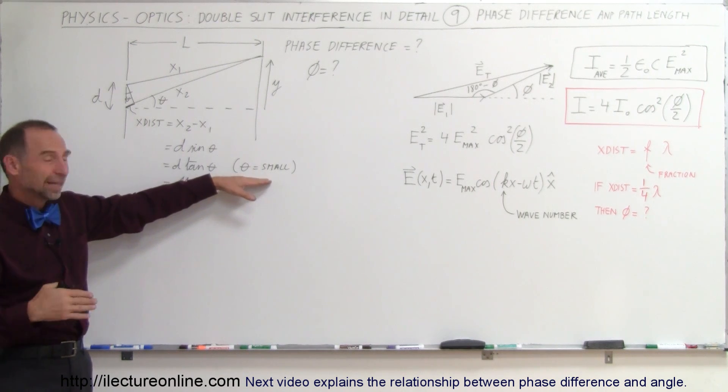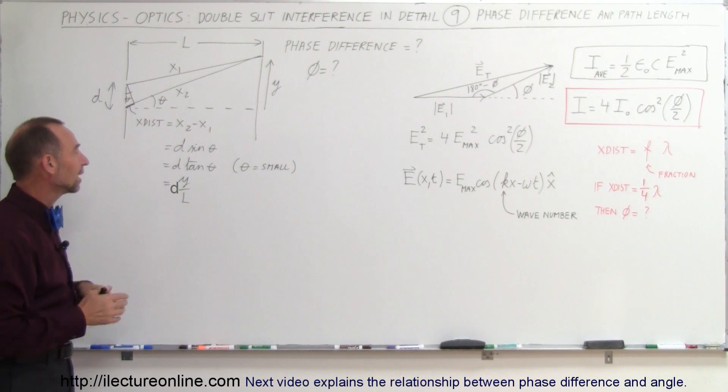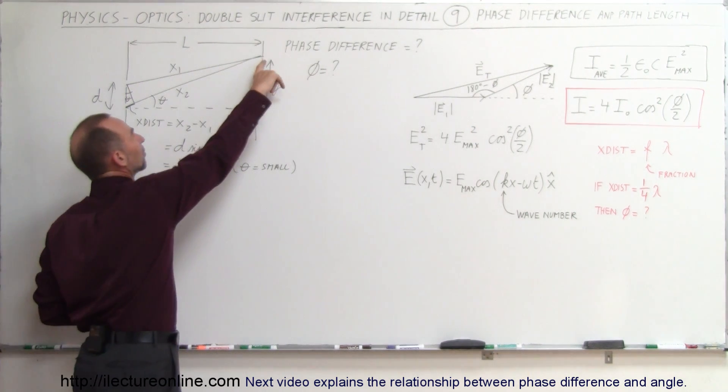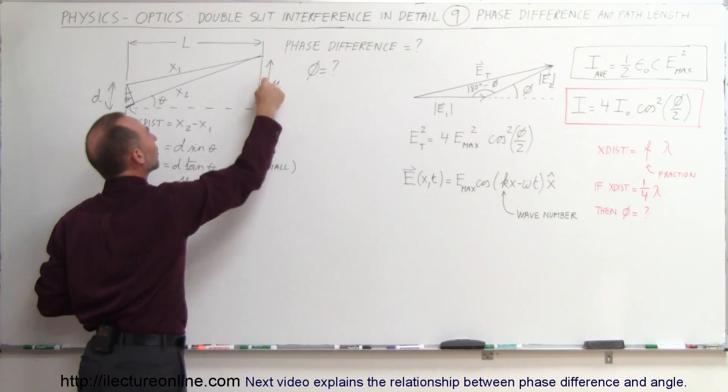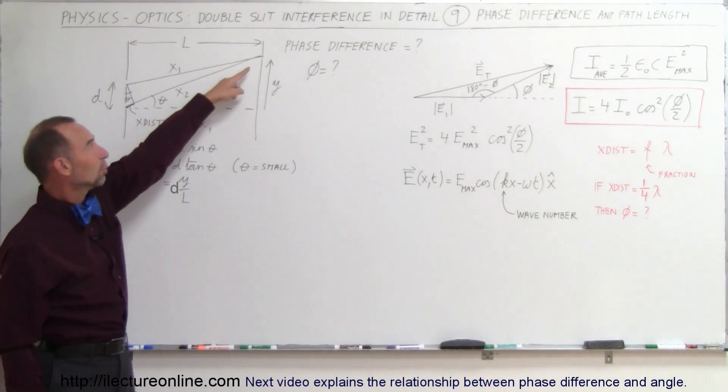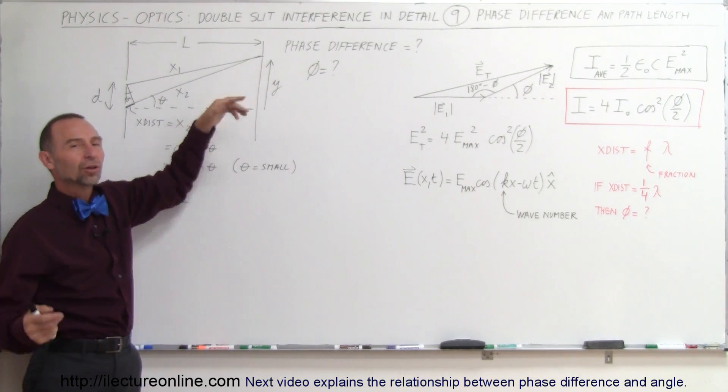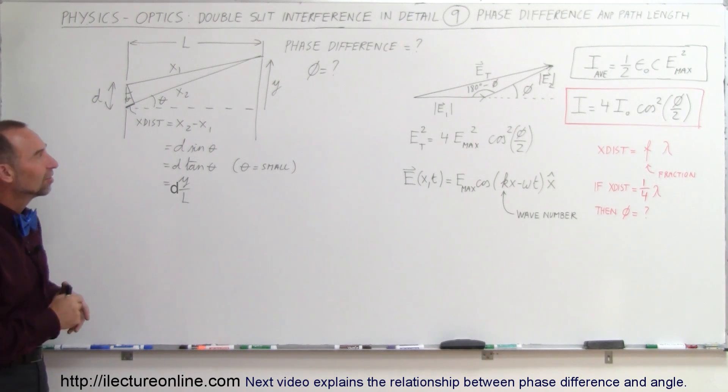Since the angles are so small in general, theta is very small, we can say that the sine of theta is equal to the tangent of theta, which equals the opposite side divided by the adjacent side, which is y divided by L. Here, y is the distance to the point on the screen of interest where we eventually want to find the intensity of the two waves when they come together—the interference pattern.